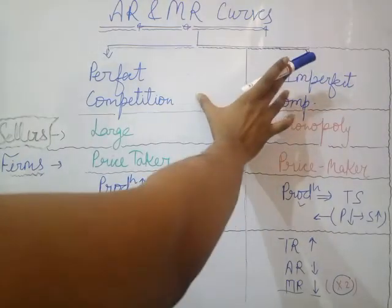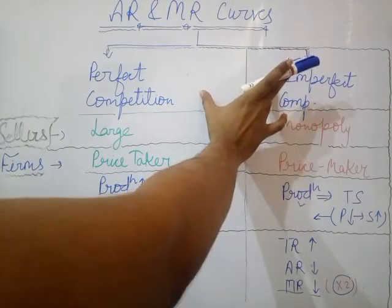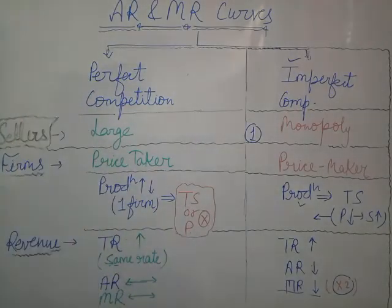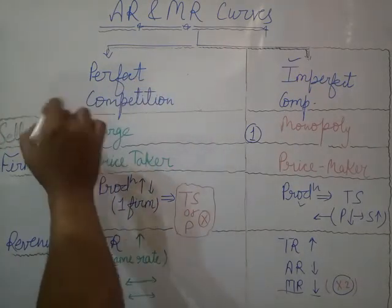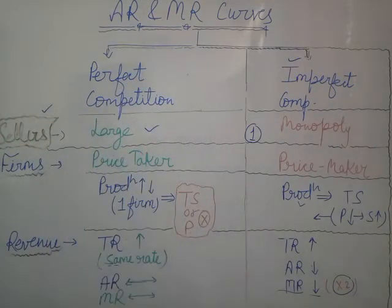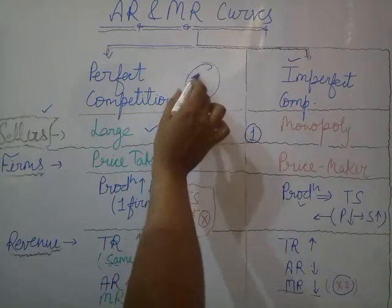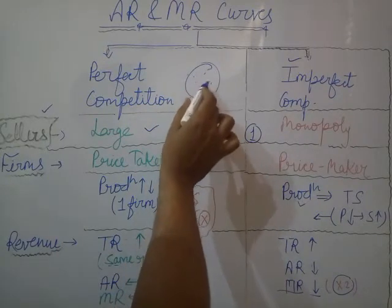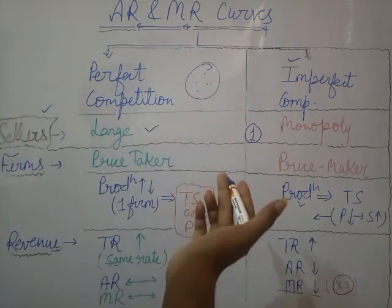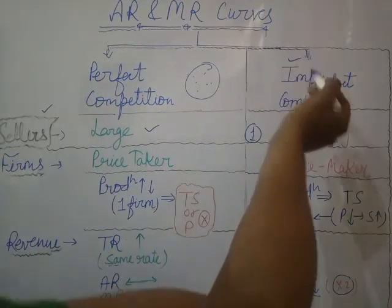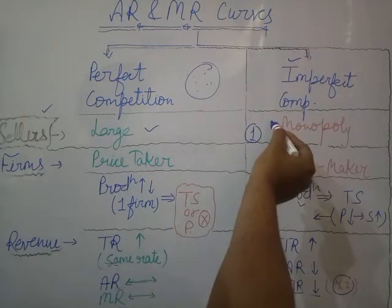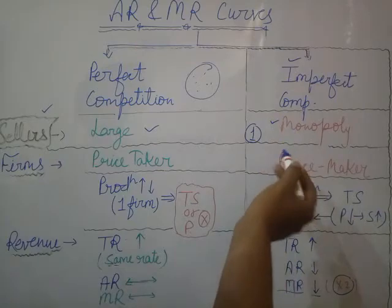The first parameter is sellers. In case of perfect competition, the number of sellers will be large — it is a very big market where a large number of sellers operate. In case of imperfect competition, the situation will be like a monopoly.